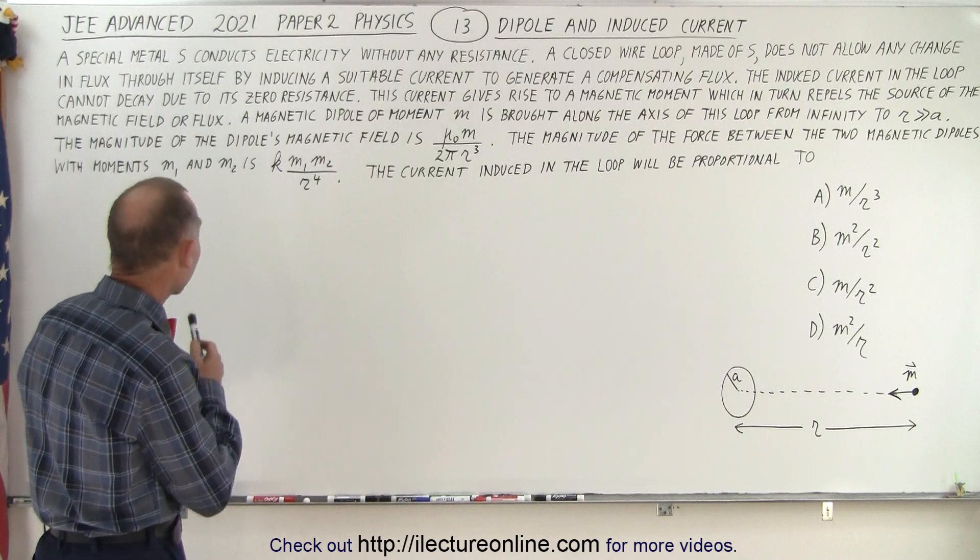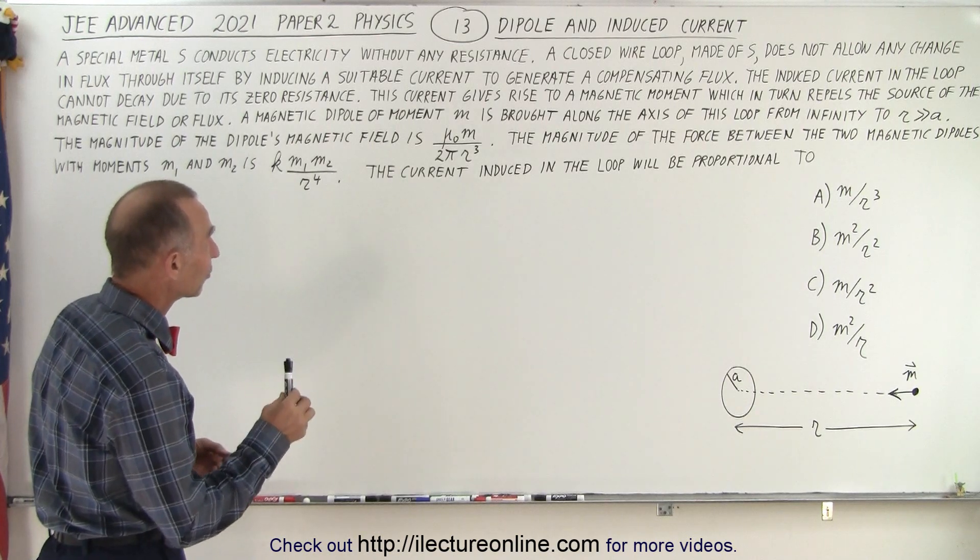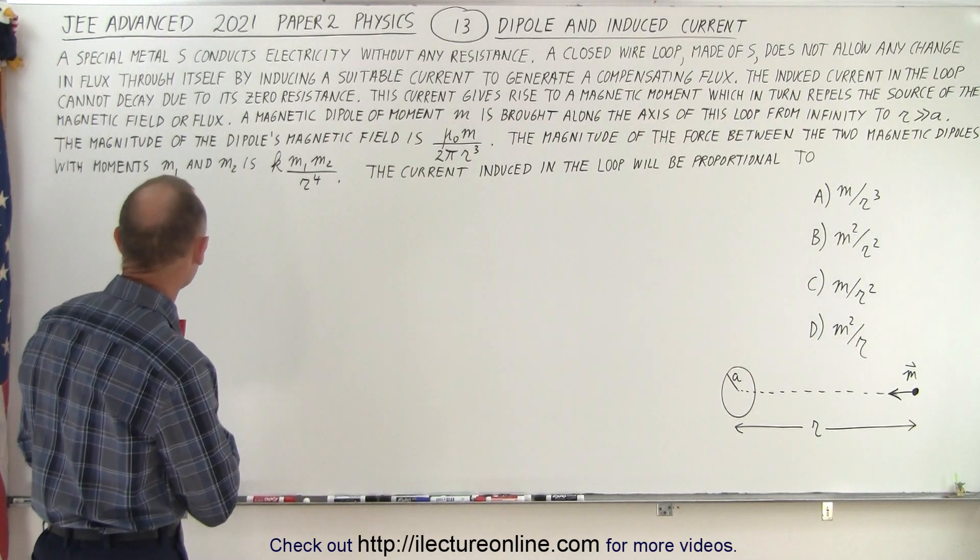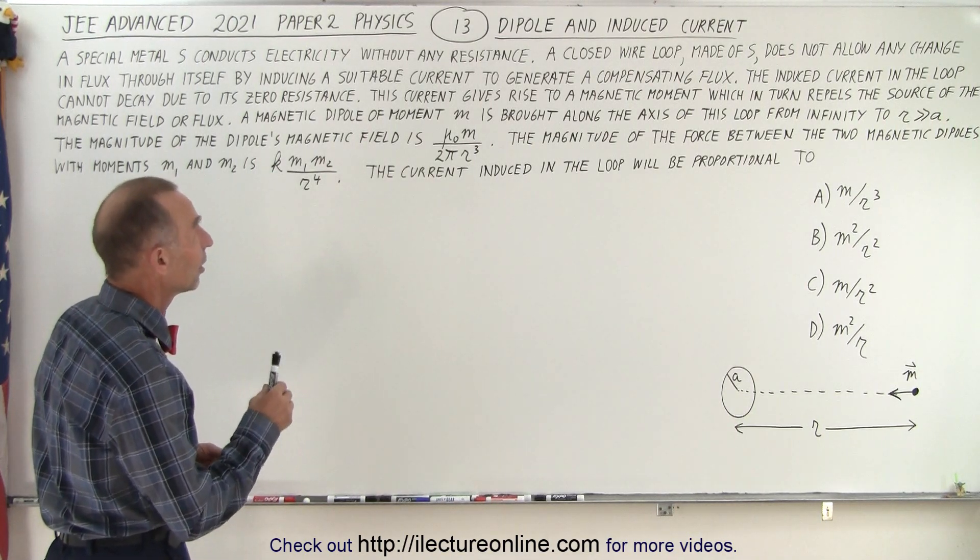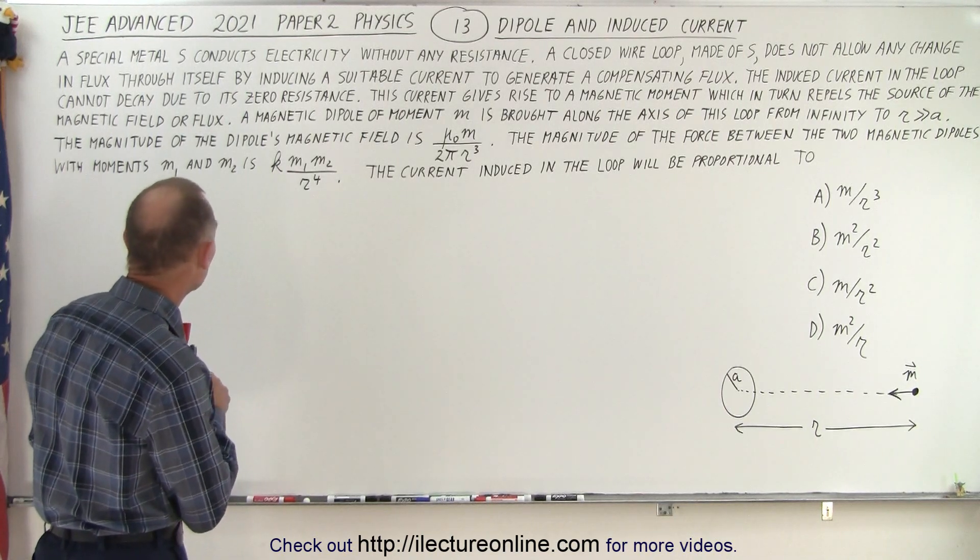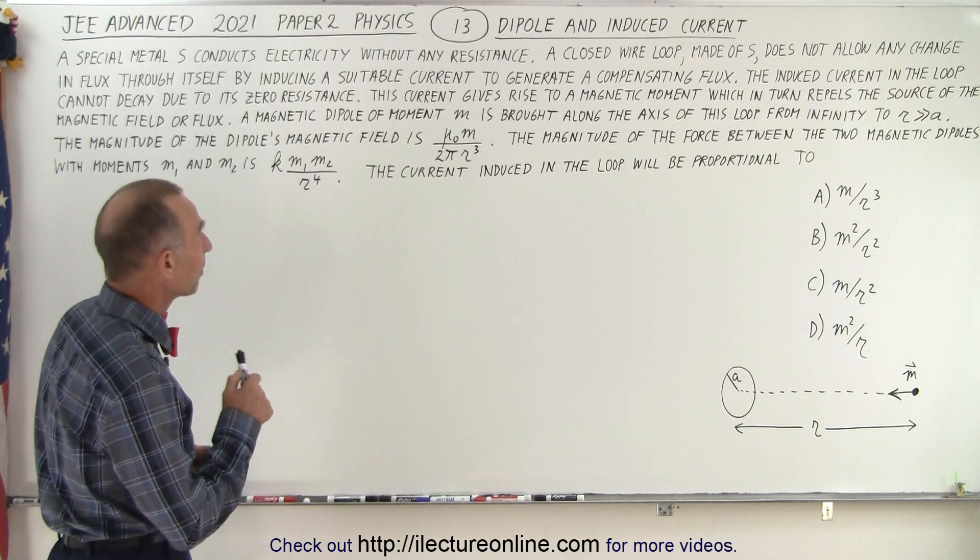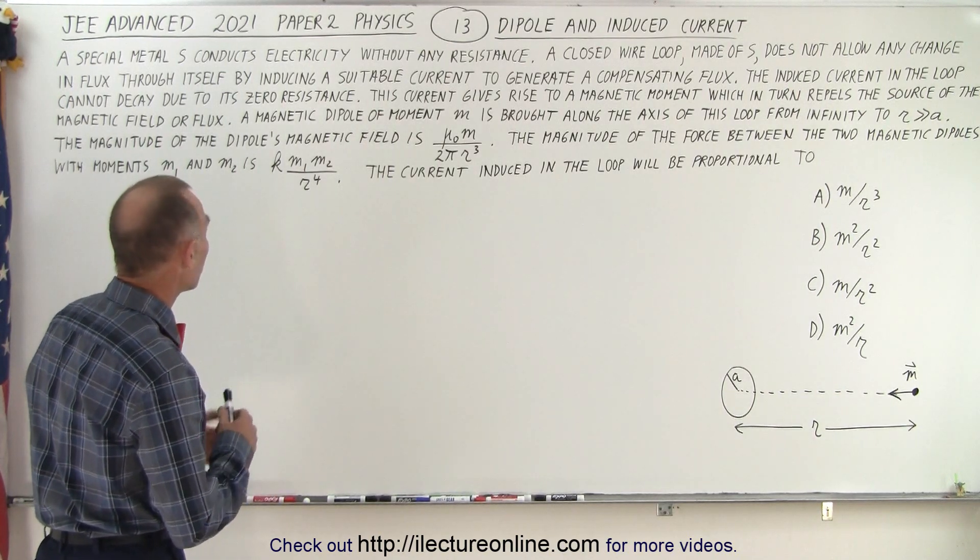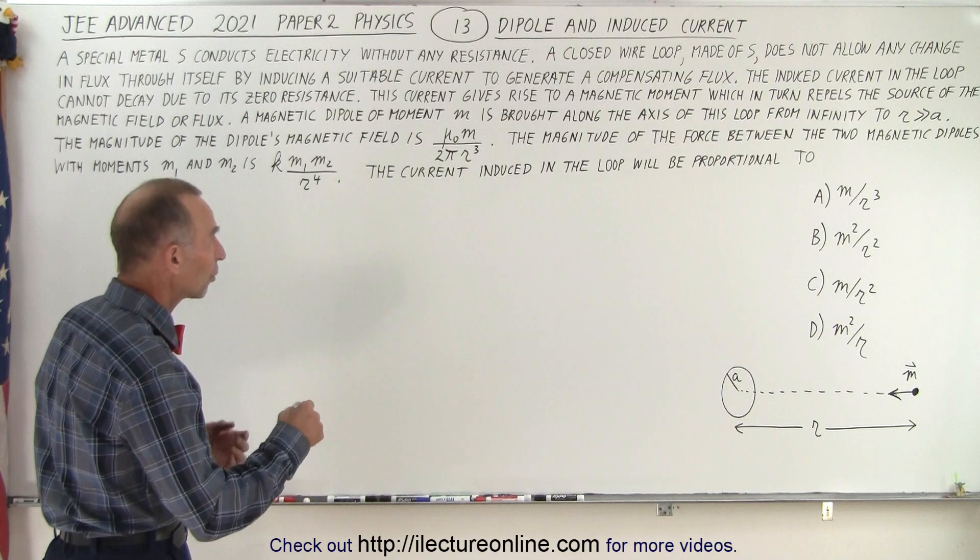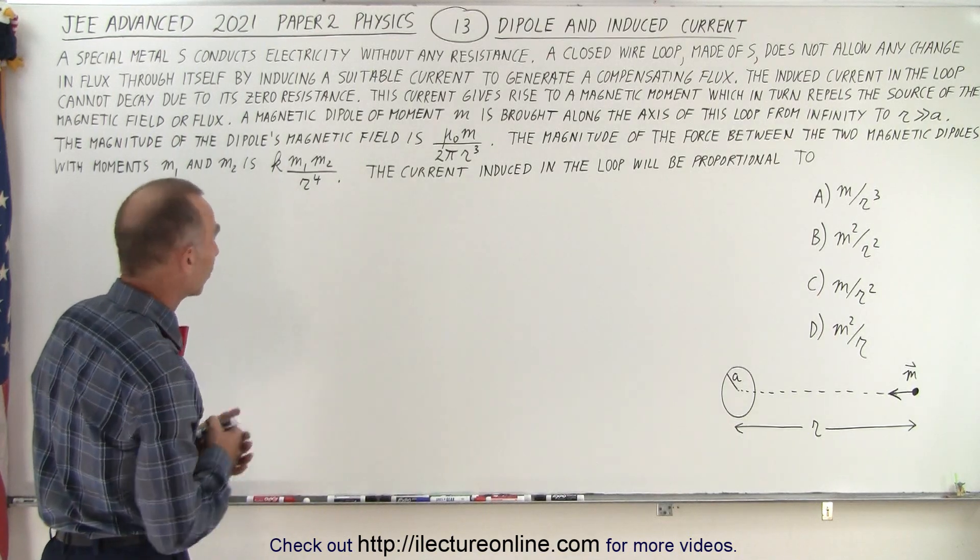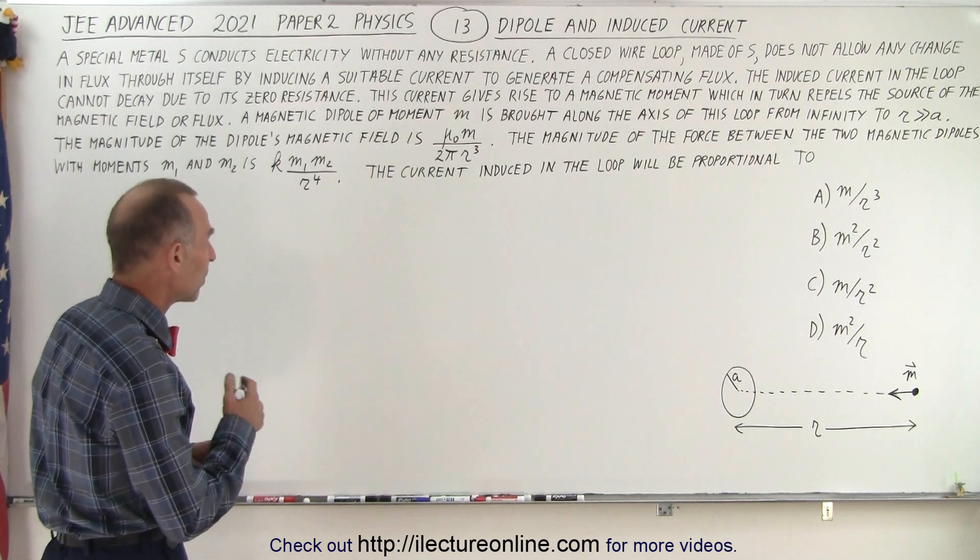So we have a special metal S that conducts electricity without any resistance. A closed wire loop made of S does not allow any change in flux through itself by inducing a suitable current to generate a compensating flux. The induced current in the loop cannot decay due to its zero resistance. This current gives rise to magnetic moment, which in turn repels the source of the magnetic field or flux. A magnetic dipole of moment M is brought along the axis of this loop from infinity to a distance R, which is much, much greater than A, where A is the radius of the loop. The magnitude of the dipole's magnetic field is μ₀M over 2πR³.